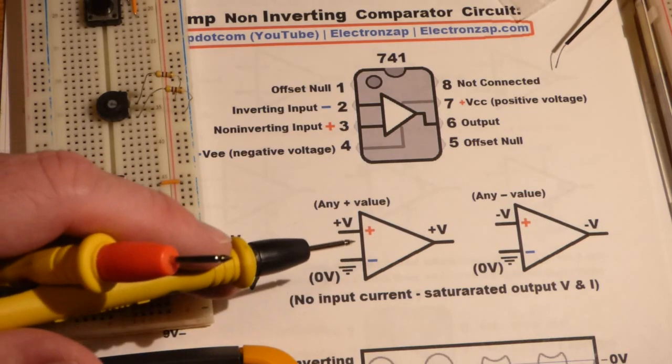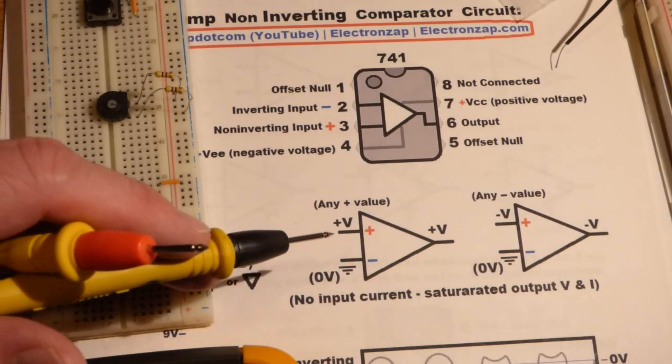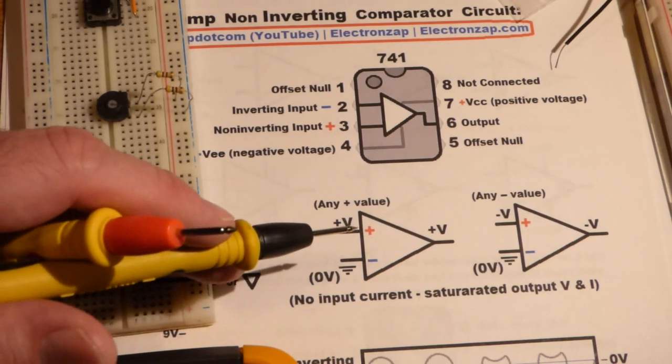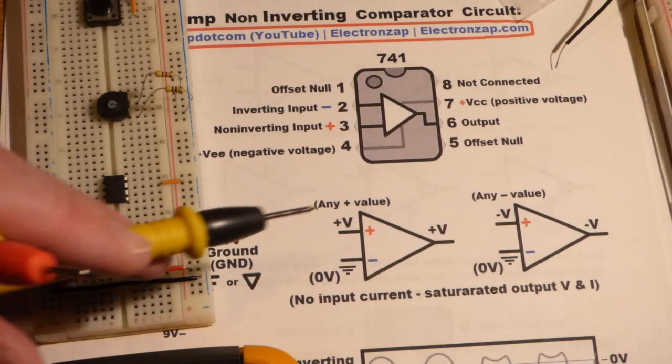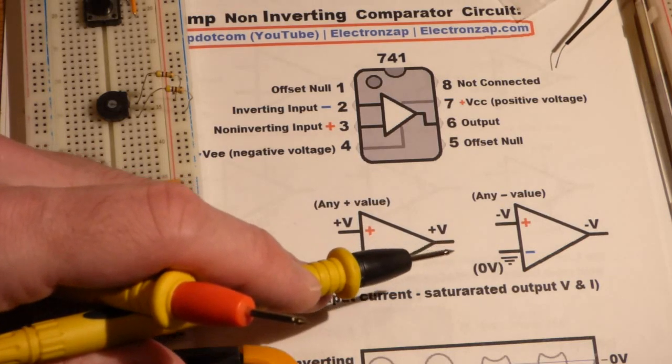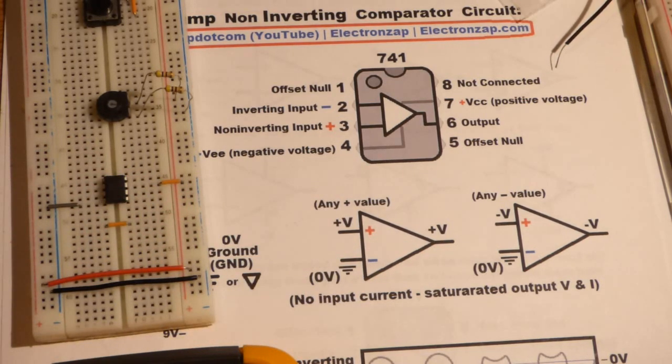One thing to remember is these two pins, they just measure the voltage. There's really no current at all that is flowing. It's just the voltage, but there is current, of course, flowing out of the output. You can actually power stuff.